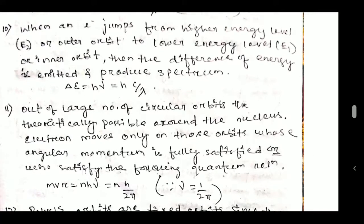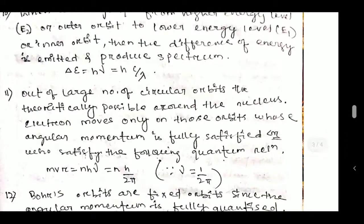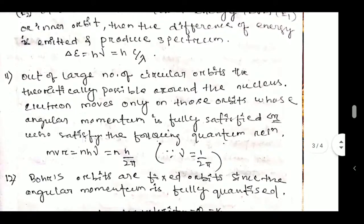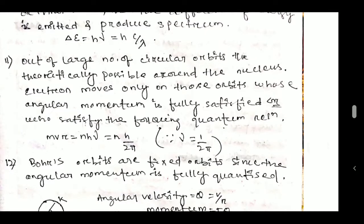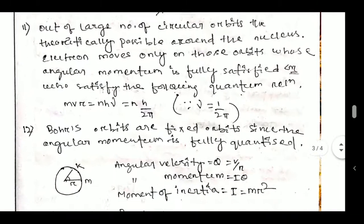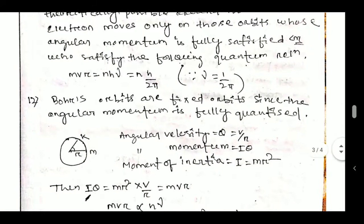Out of the large number of circular orbits theoretically possible around the nucleus, the electron moves only on those orbits whose angular momentum is fully quantized. The formula for angular momentum is: mvr = nh/2π, since ν = 1/2π, so nh × (1/2π) = nh/2π.